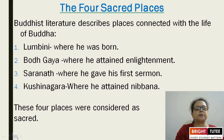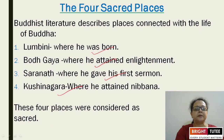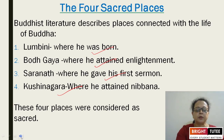Buddhist literature describes four sacred places connected to the life of Buddha. Lumbini, where he was born; Bodh Gaya, where he attained enlightenment; Sarnath, where he gave his first sermon; and Kushinagar, where he attained Nibbana — meaning salvation, where he passed away. These four places were considered sacred for the life of Buddha.